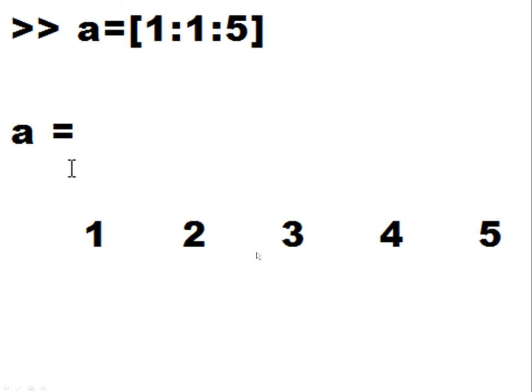And so a is now equal to this array, this rectangular grid of numbers: 1, 2, 3, 4, 5.